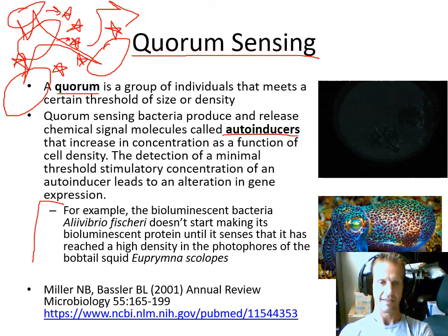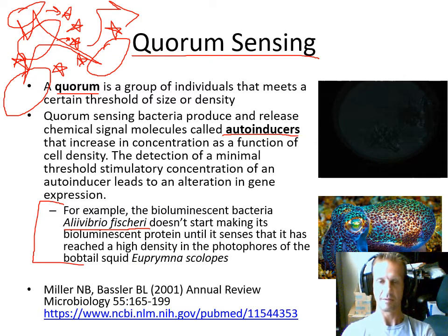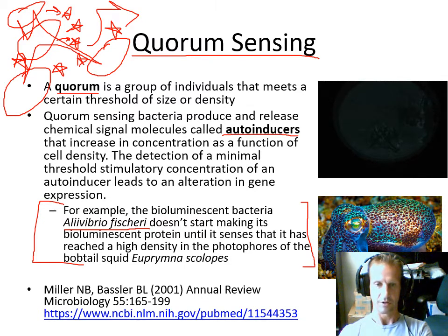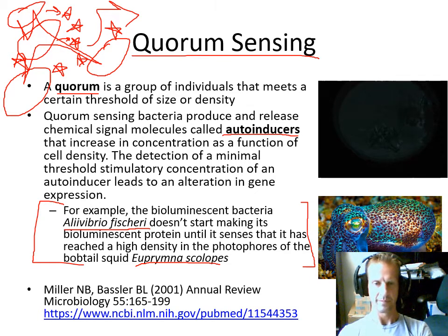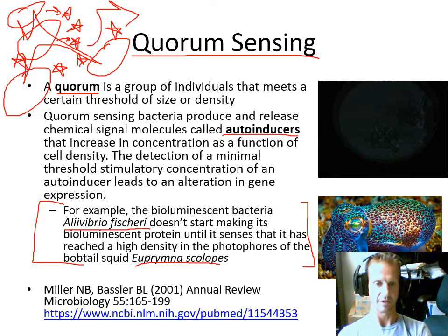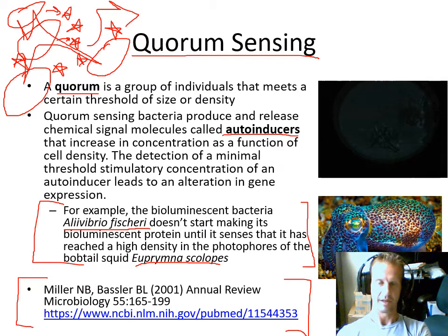An example is a microbe called Aliivibrio — a type with bioluminescent capabilities that lives symbiotically in cephalopods like the bob-tailed squid Euprymna scolopes. There's no benefit to the microbe of bioluminescing when it's just one microbe by itself. But when it's in a high density aggregation within the photophores — the light producing organs of the squid — it turns on its bioluminescent ability. This benefits both the squid and the microbe, since creating light is its role in the symbiotic relationship.